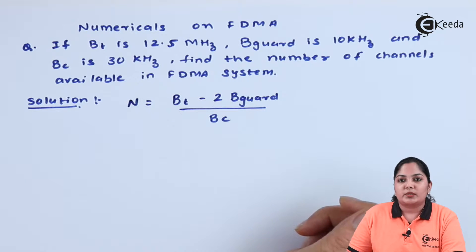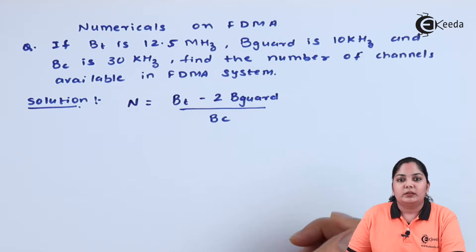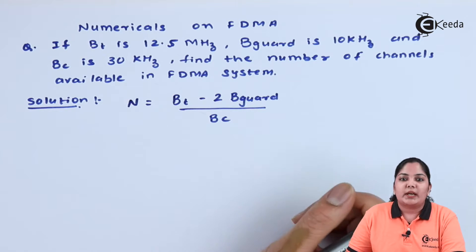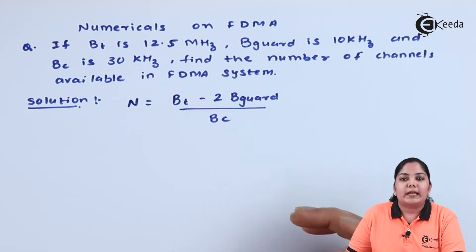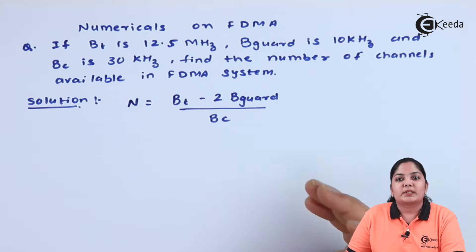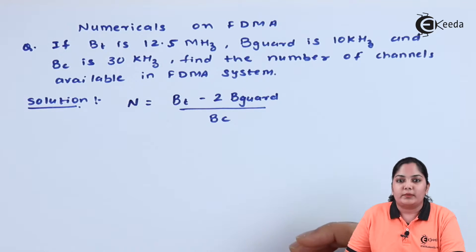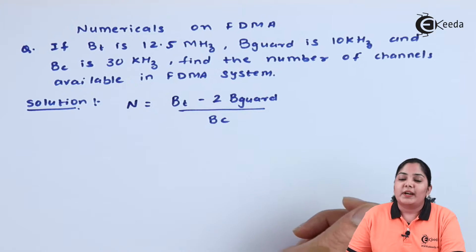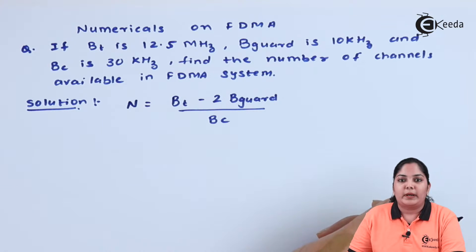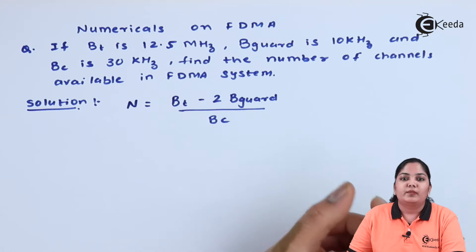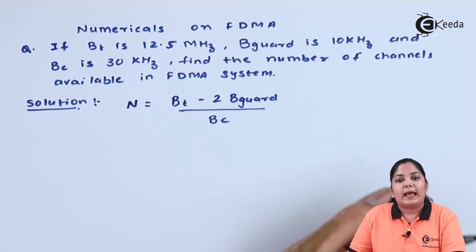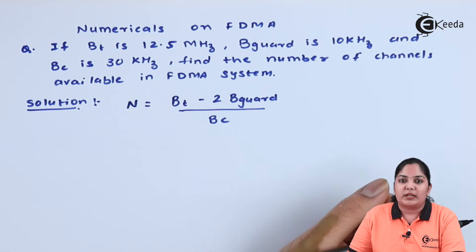Why do we take twice the guard band? The reason is that every channel has a guard band before it and after it. Hence, we subtract two times the guard band — every frequency has a guard band before the channel and after the channel.